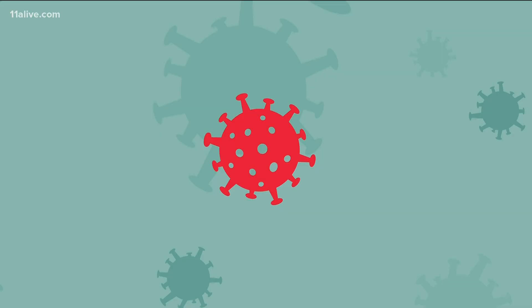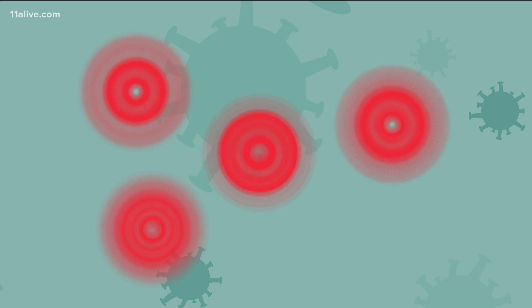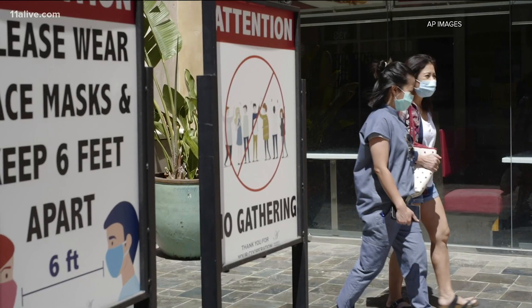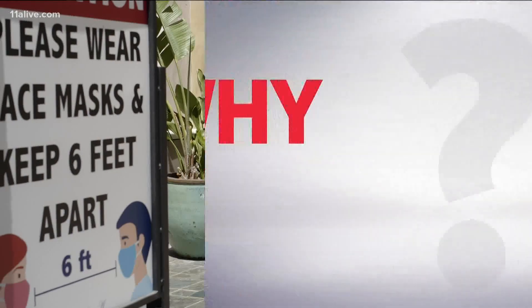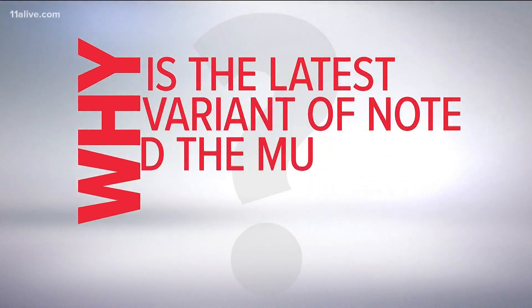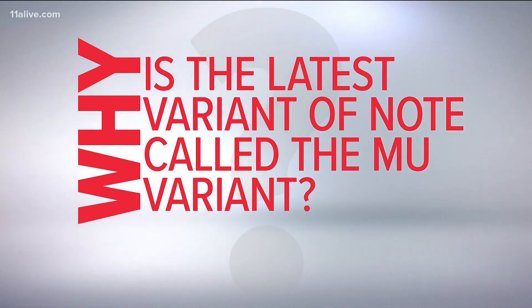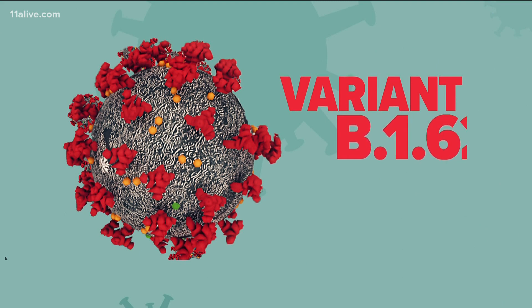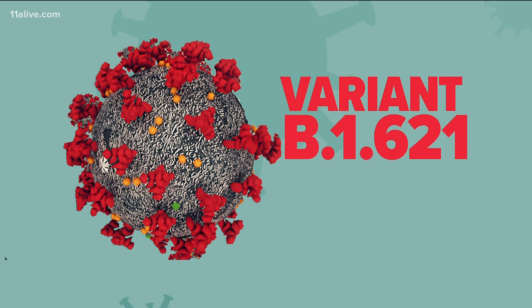Since it first emerged, the coronavirus has mutated, creating many variants. You've heard a lot about Delta. Now let's explore why the latest variant to grab our attention is known as the Mu variant.